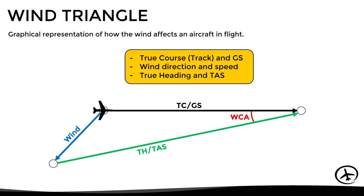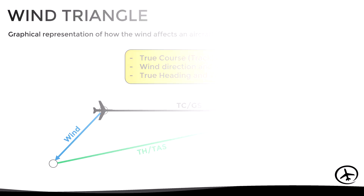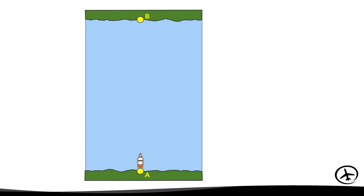However, the way the triangle is constructed may vary slightly. So before we get into how to construct it, let's see the logic behind the wind triangle. For instance, let's look at this example of a boat trying to cross a river from point A to point B.